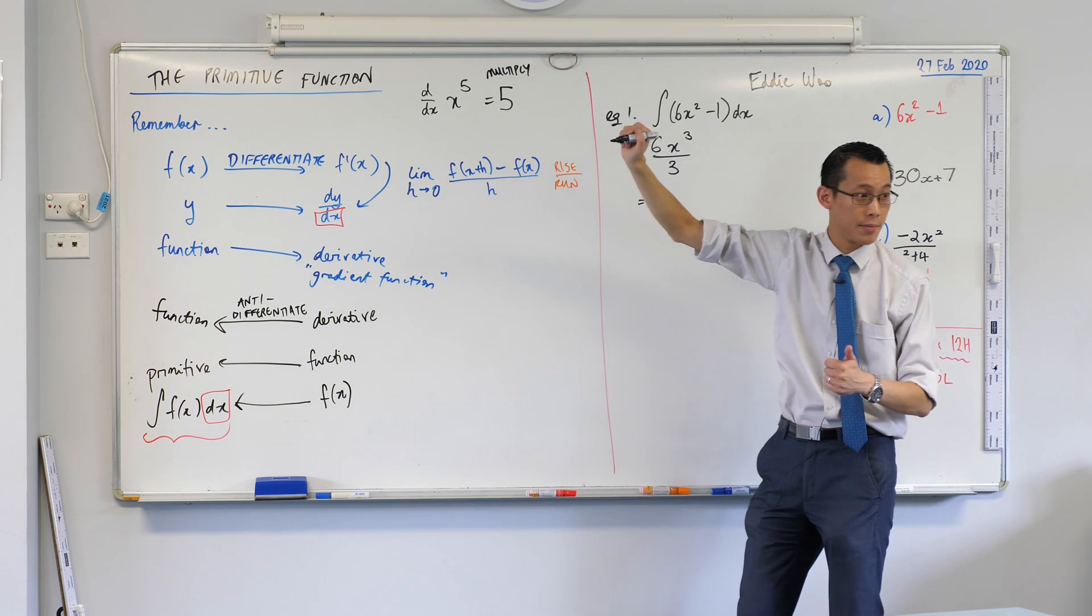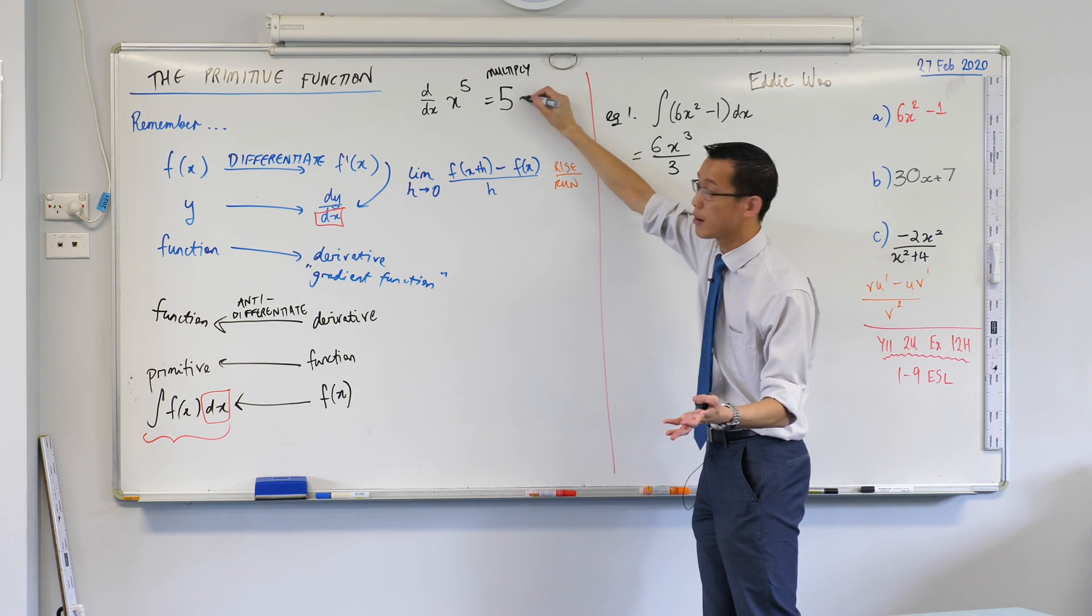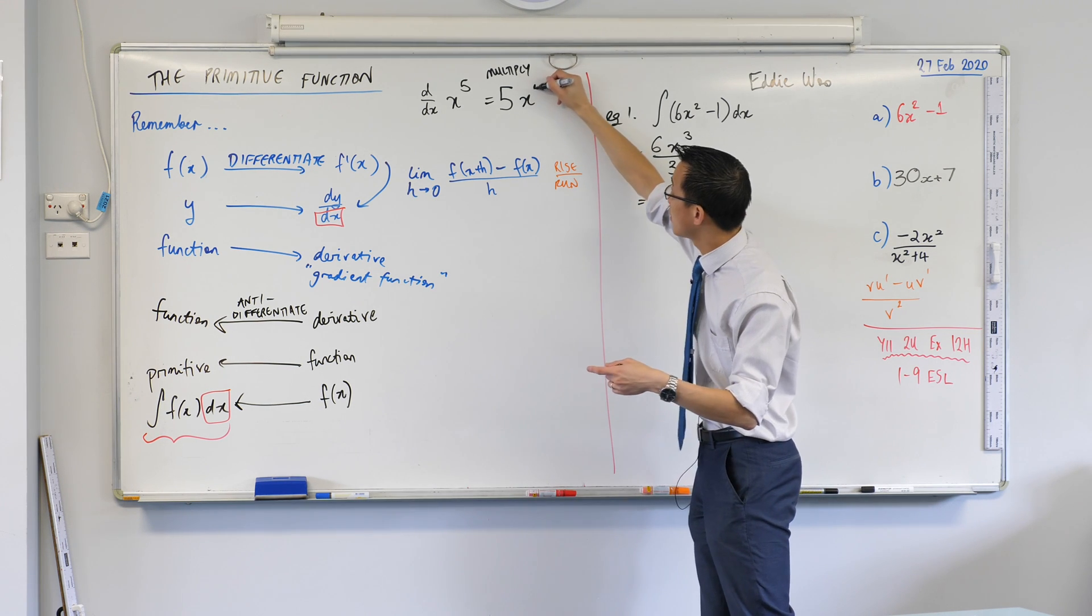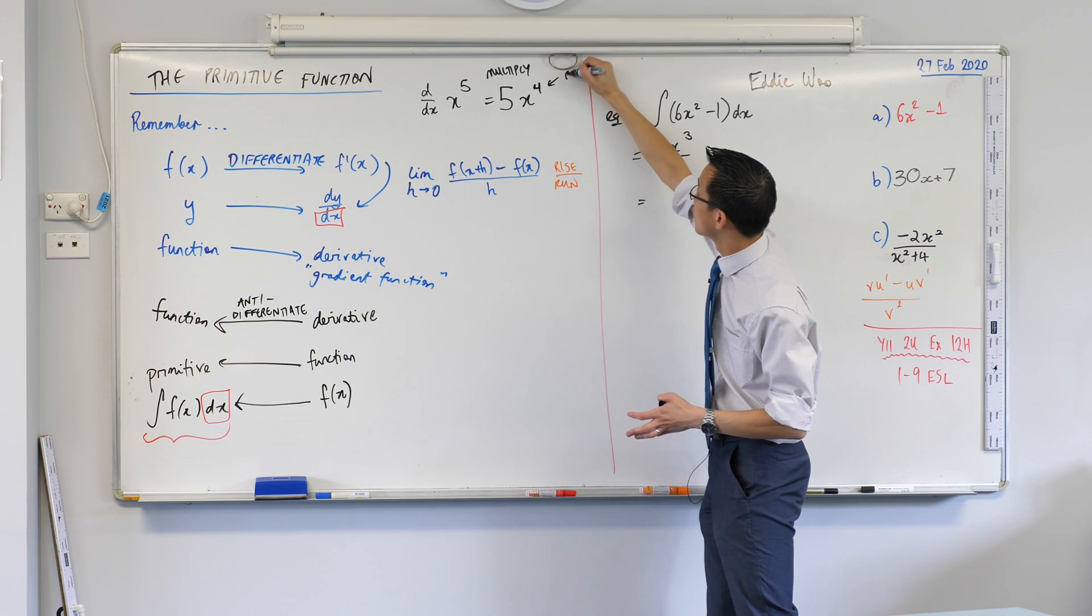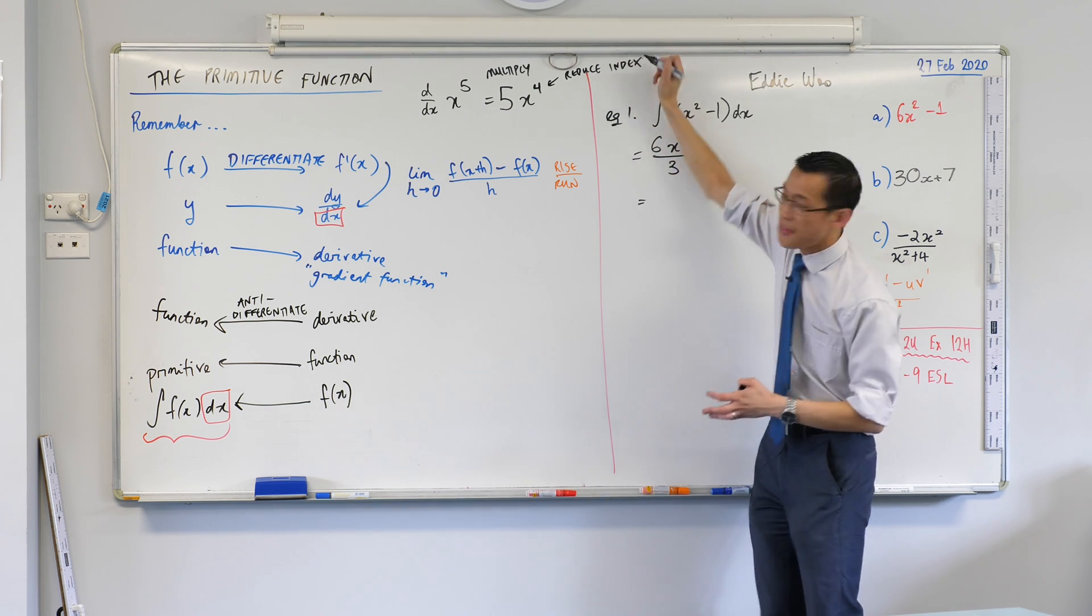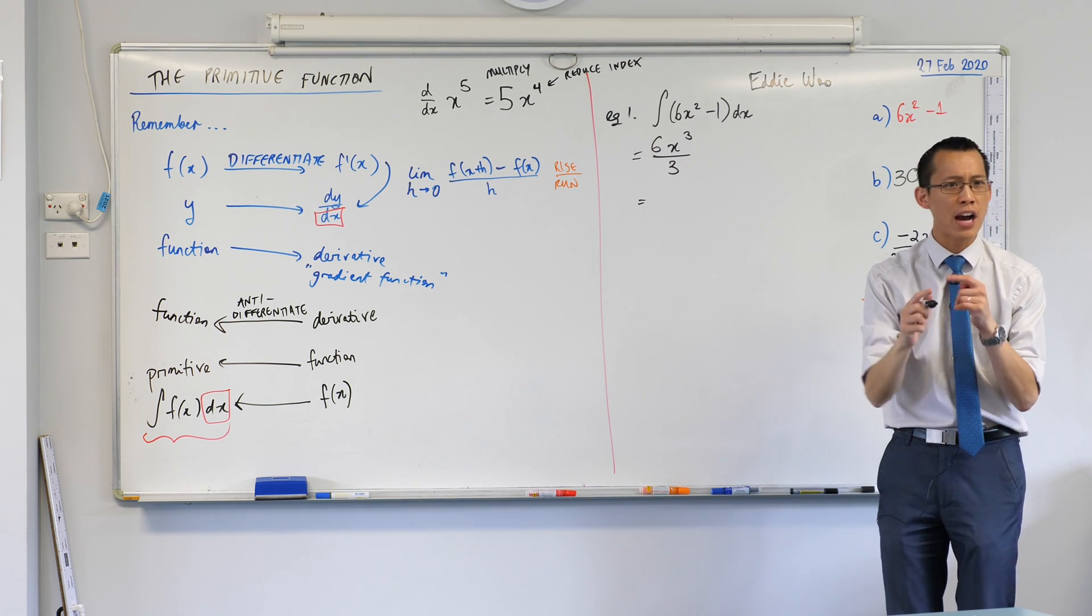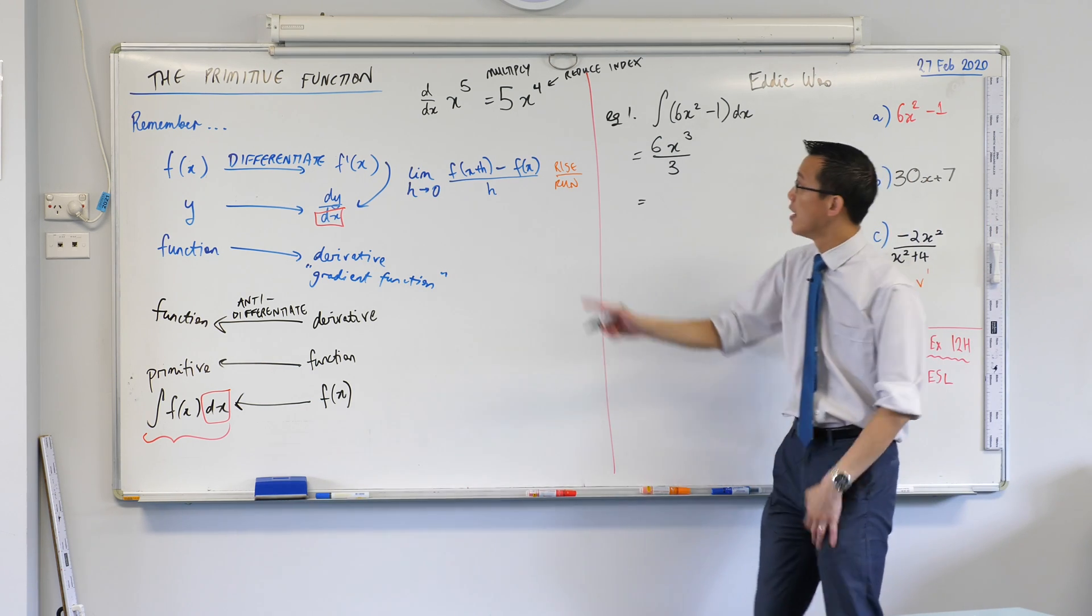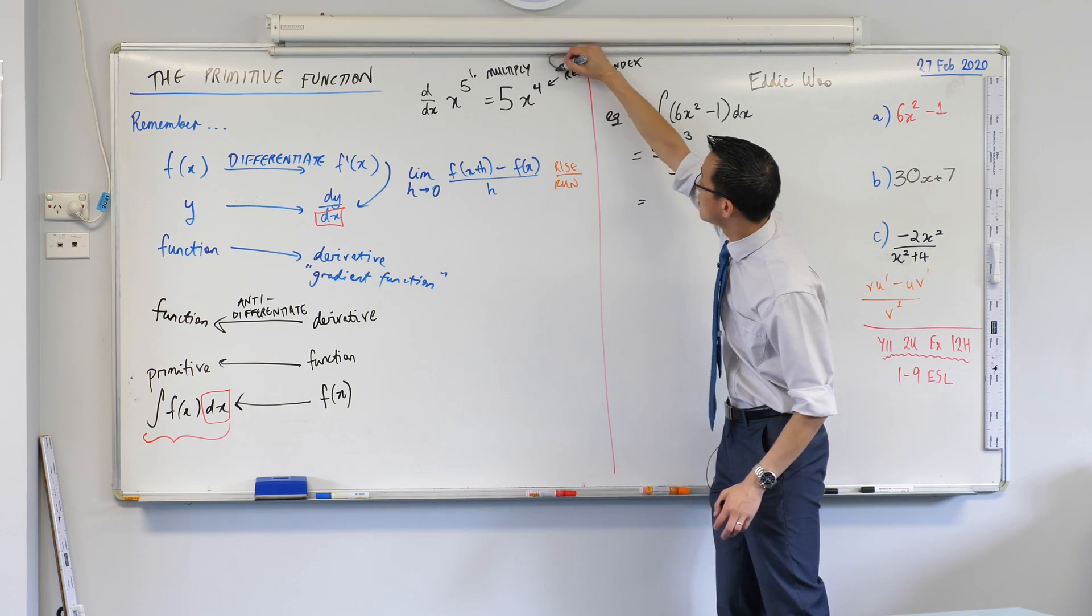And then secondly, you reduce the index by 1, right? Like so. Is that okay? So reduce index. Now, that order matters, doesn't it? You can't reduce the index and then multiply. You get a different result, wouldn't you? So this is step one. This is step two.